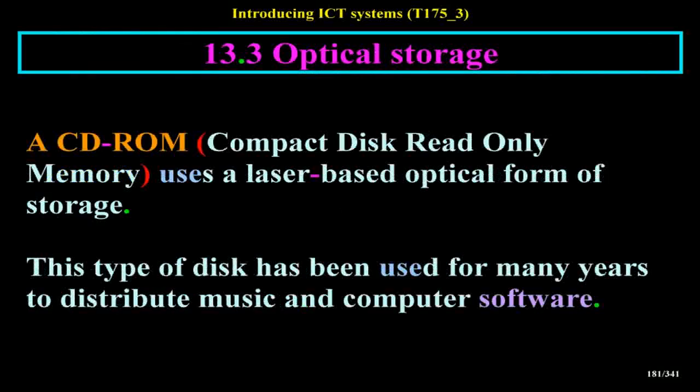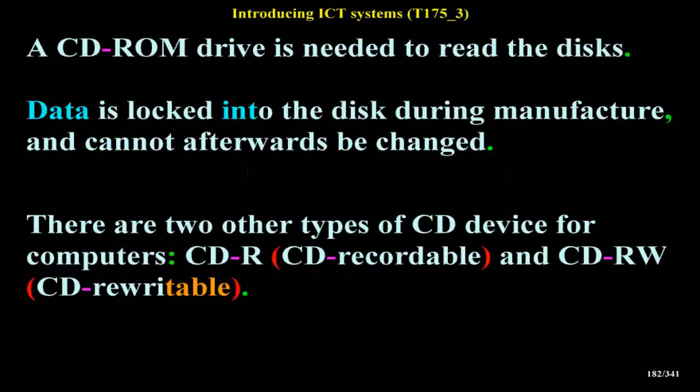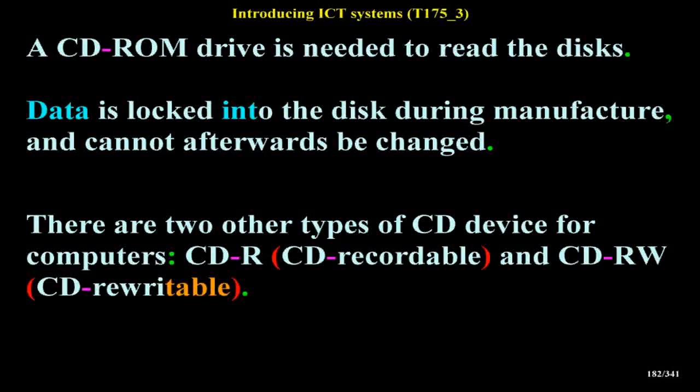Optical storage: a CD-ROM (compact disk read-only memory) uses a laser-based optical form of storage. This type of disk has been used for many years to distribute music and computer software. A CD-ROM drive is needed to read the disks. Data is locked into the disk during manufacture and cannot afterwards be changed.